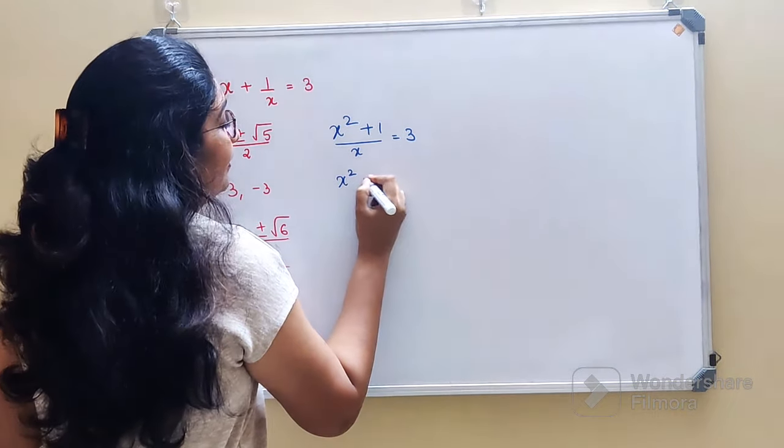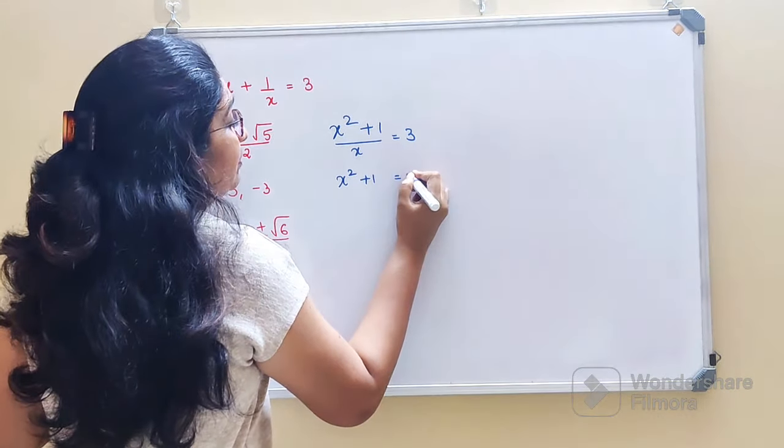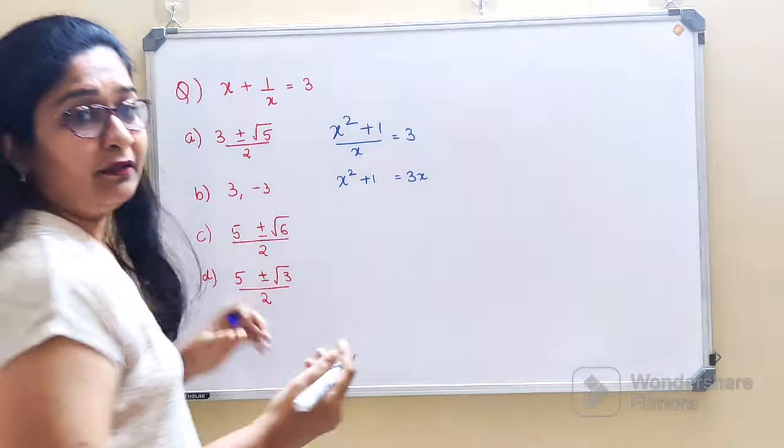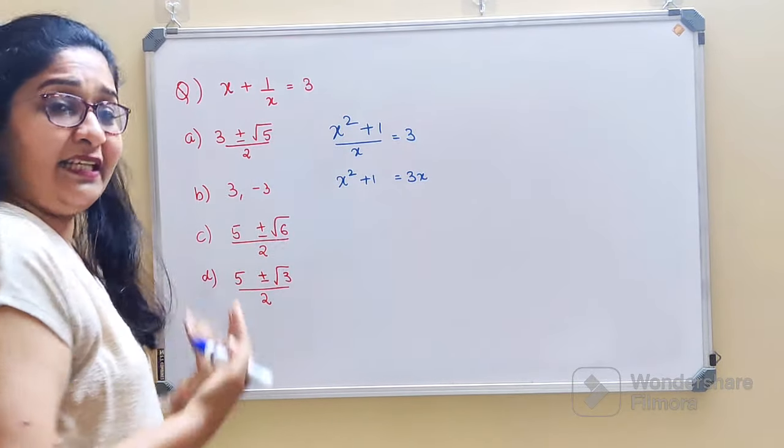Now let's shift this x on this side, so x squared plus 1 is equals to 3x. Now let's shift everything on this side of the equal to, so we'll get a quadratic.